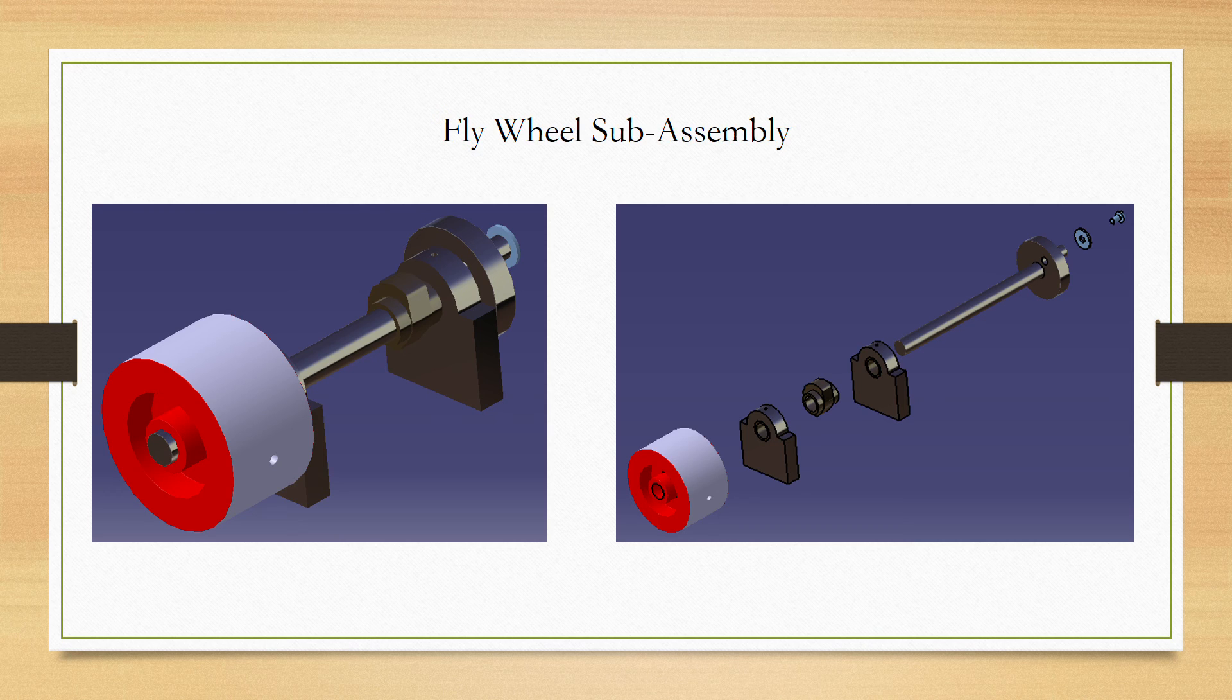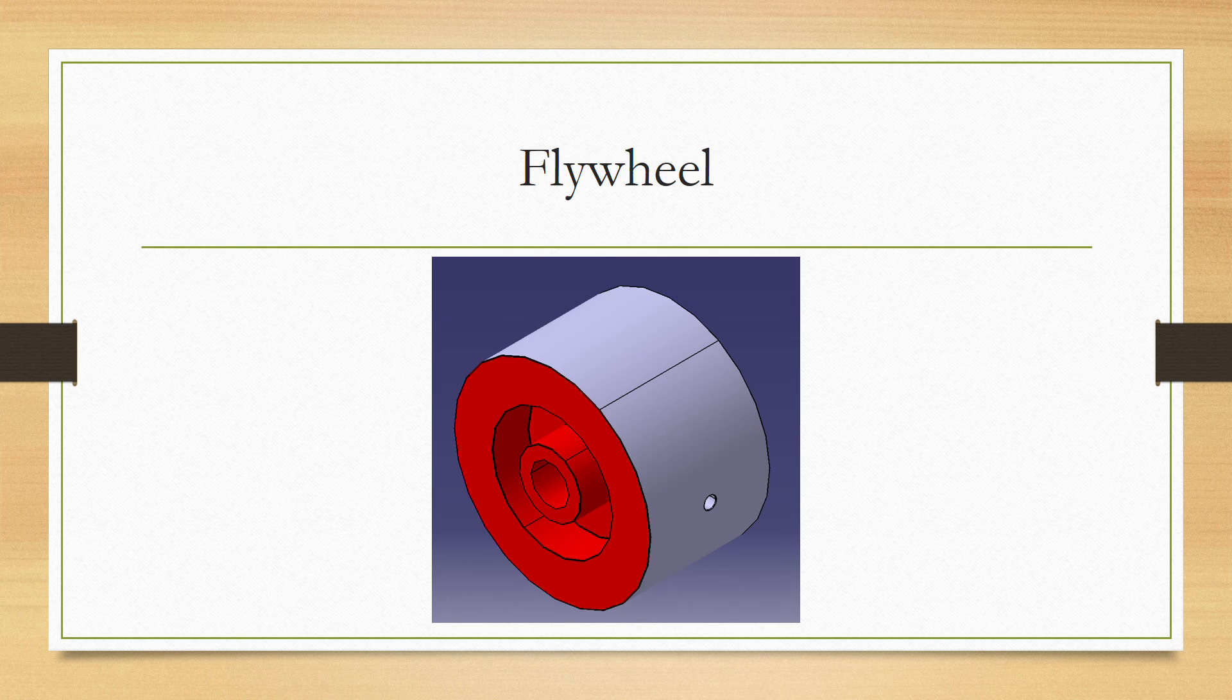Next up is the flywheel sub-assembly. The flywheel sub-assembly consists of four major parts: the flywheel in red, the crankshaft, the two bearing plates holding the crankshaft, and the cam that moves the valve rod. It also includes a washer and a screw that holds the crankshaft and the piston rod together. The purpose of the sub-assembly is to store rotational energy during the engine cycle.